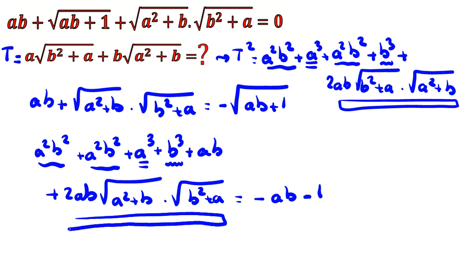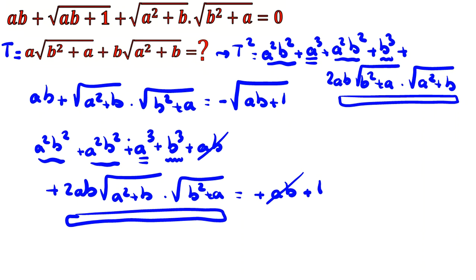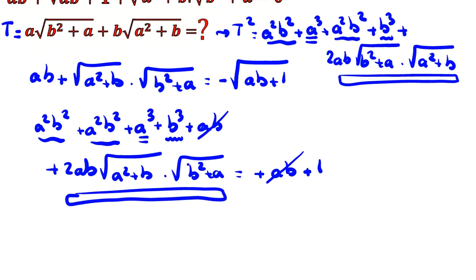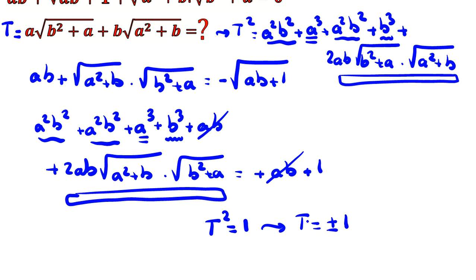On the left side, since we raised both sides to the power of 2, the negative becomes positive. The ab terms cancel, and comparing both sides we get t² = 1. We conclude that t can be plus or minus one. We should check which is possible.